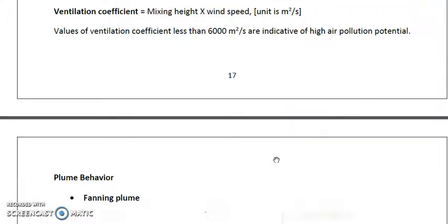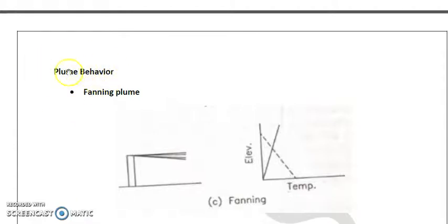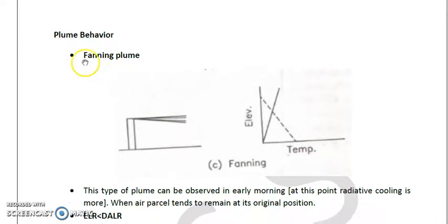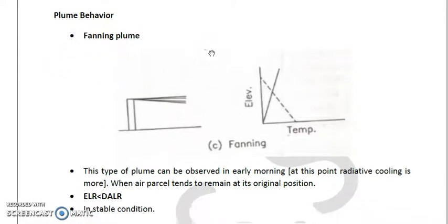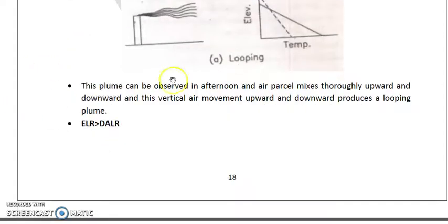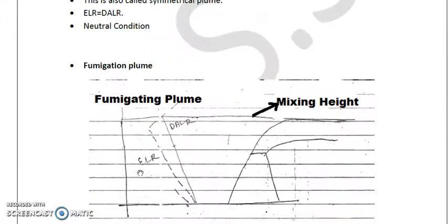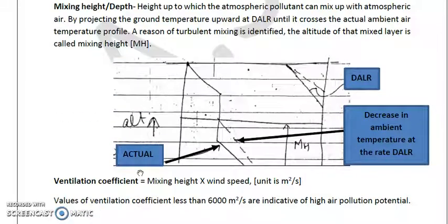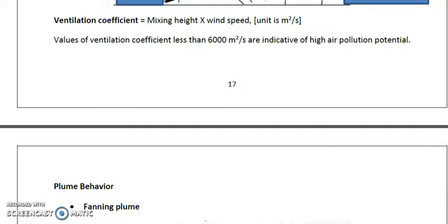Now we will discuss plume behavior — how smoke plumes emitted from chimneys or stacks of different industries behave in the environment under stable, unstable, neutral, or conditionally stable conditions. There are five types of plume behavior: fanning plume, looping plume, coning plume, fumigation plume, and lofting plume. We will discuss the fanning plume first.